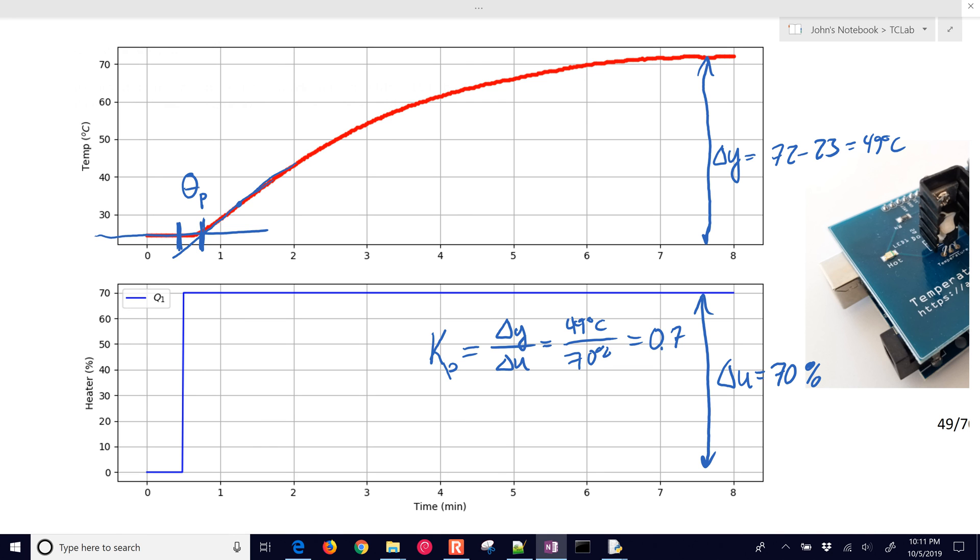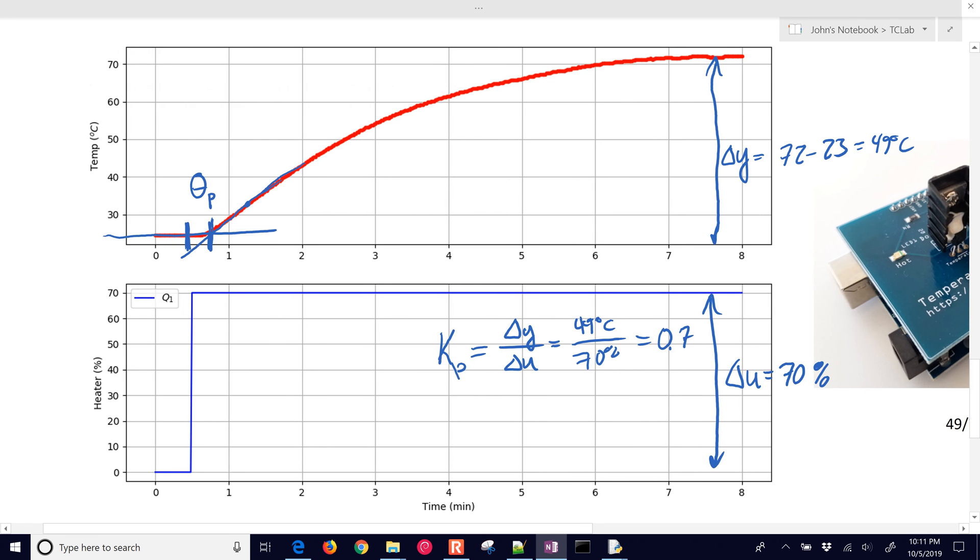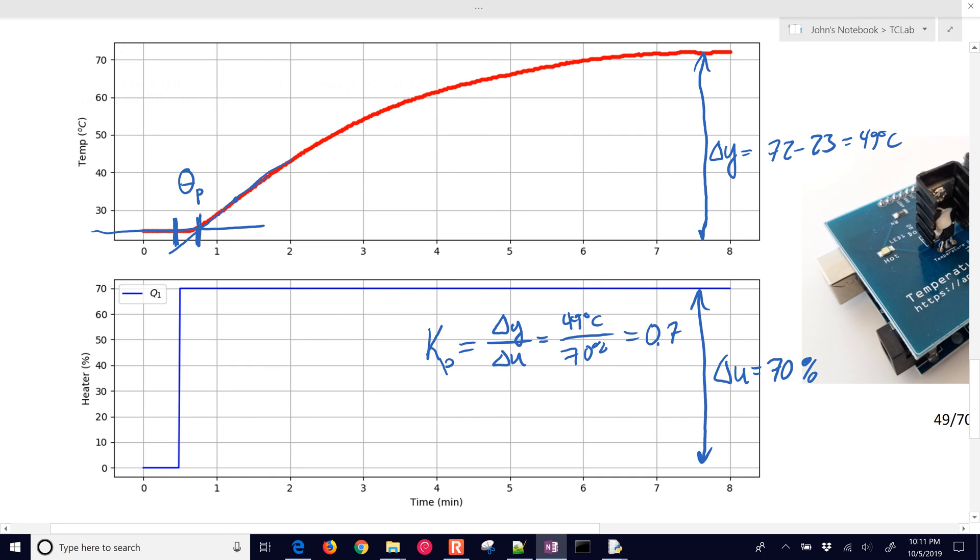And so our theta P is going to be about, it looks like about a quarter of a minute. So I'll just say that's about equal to 15 seconds. And then the next thing that we need is we need to take delta Y and then multiply it by time for one time constant to get 63 percent of the way there.